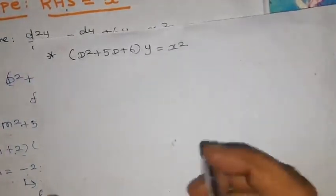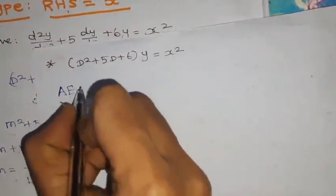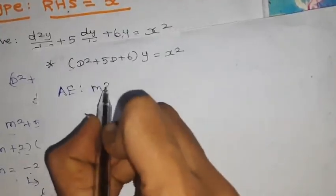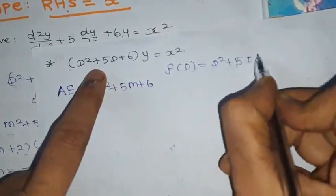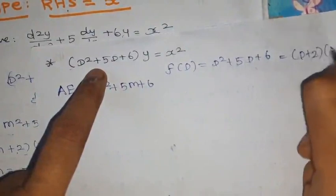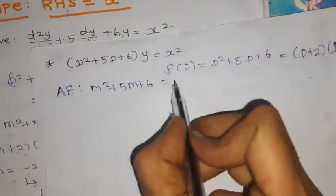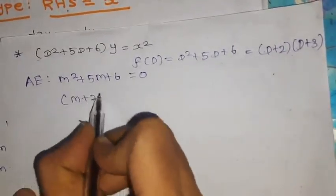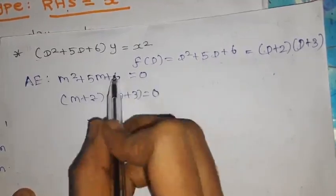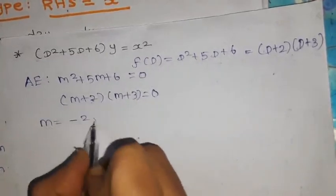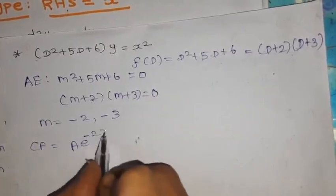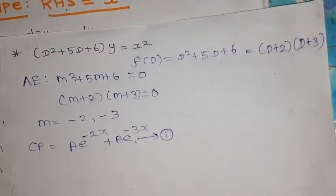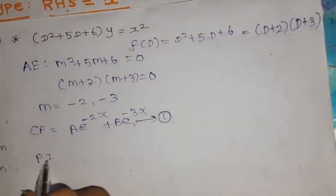Next problem: (D² + 5D + 6)y = x². The auxiliary equation is m² + 5m + 6 = 0, factoring as (m+2)(m+3) = 0, giving roots m = −2, −3. Roots are real and unequal. CF = A·e^(−2x) + B·e^(−3x). This is the complementary function.